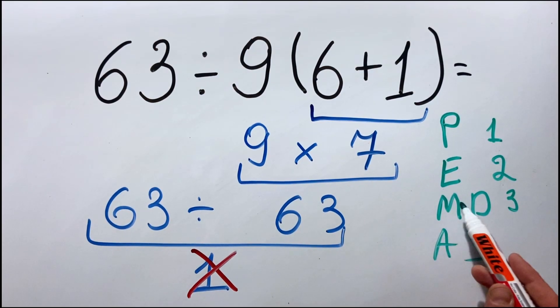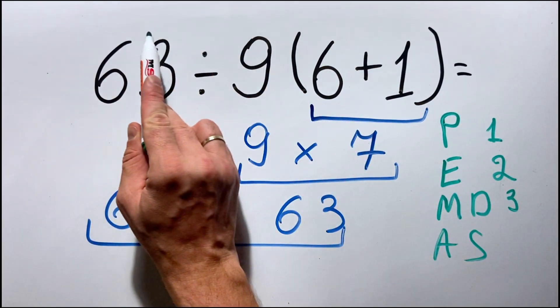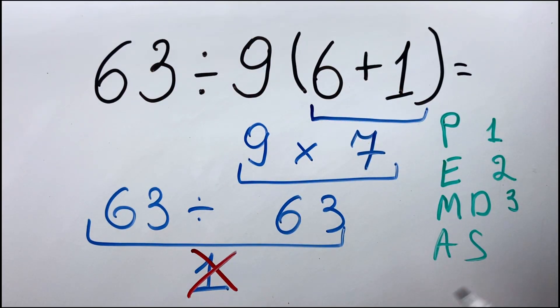And the multiplication and division, they have equal priority. Therefore, they need to be done from left to right. And in the first place, we do addition and subtraction.